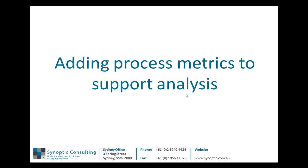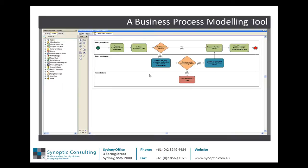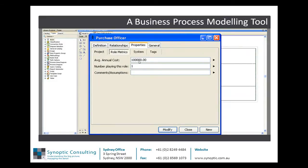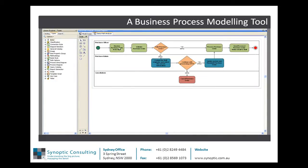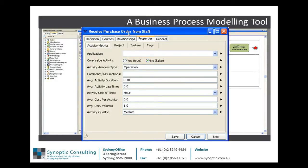Let's add some process metrics to support further analysis. There are two kinds of metrics to consider: one concerns the roles themselves, and the other concerns the actual steps in the process map. For the purchase officer role, the most important metric is the annual cost. We're running an activity-based cost model, so we need the annualised cost of that role, which typically includes on-costs. The second kind of metric concerns process steps. For the first step — receiving a purchase order from staff — there are two kinds of time: duration, which is time spent working on the step (0.1 hours, representing six minutes), and lag time, which drives the overall elapsed time of the process.